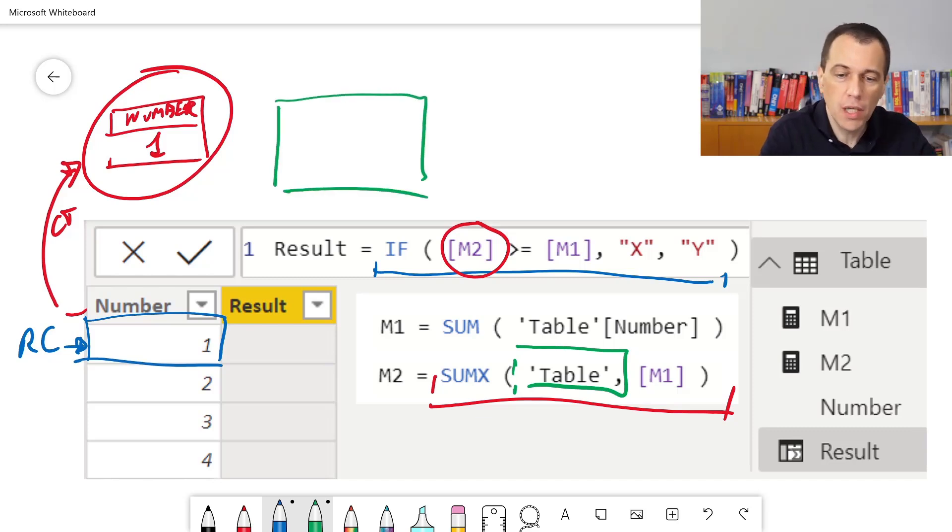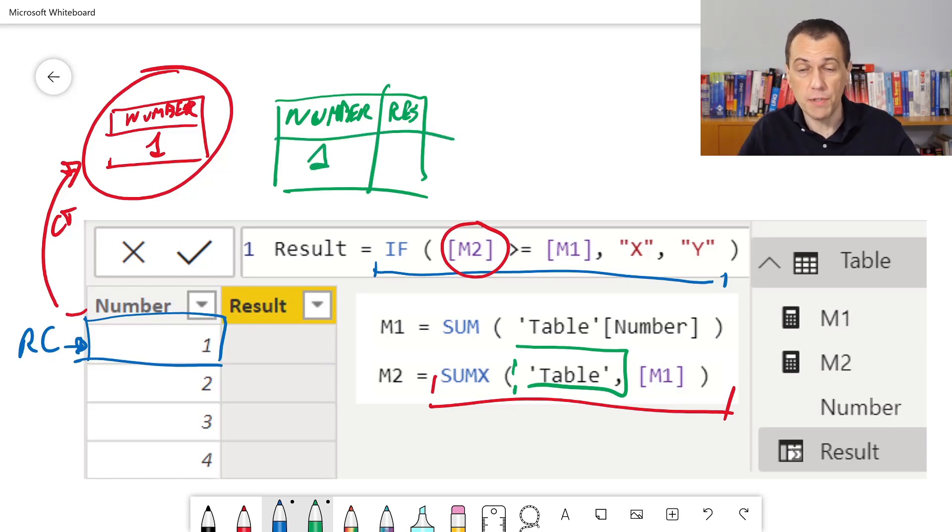Two. We have number, but we also have result. Now, we know number. We don't know result. We are computing result. So far so good, but what happens now?